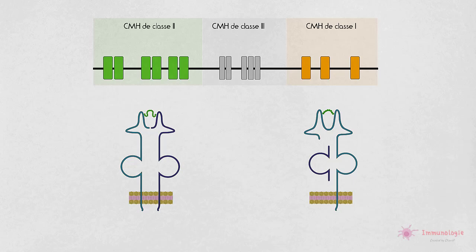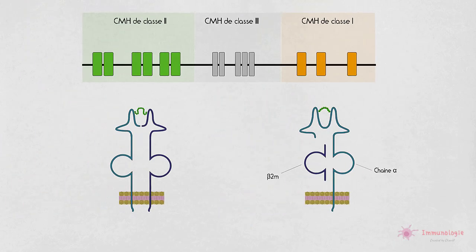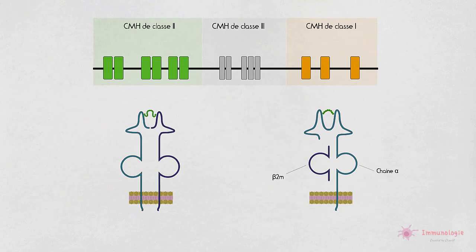Rappelons que la molécule de CMH de classe 1 est composée de deux chaînes: la chaîne polymorphe alpha qui contient la poche peptidique, et la chaîne commune bêta-2-microglobuline. Seule la chaîne alpha est codée par les gènes CMH de classe 1. La bêta-2-microglobuline est codée en dehors du locus du CMH, sur un chromosome distinct, le chromosome 15 chez l'homme.